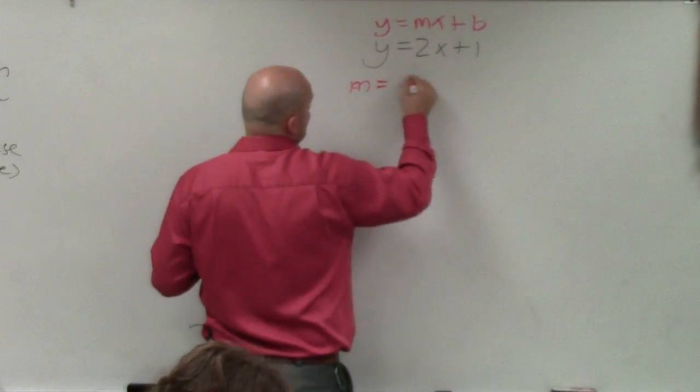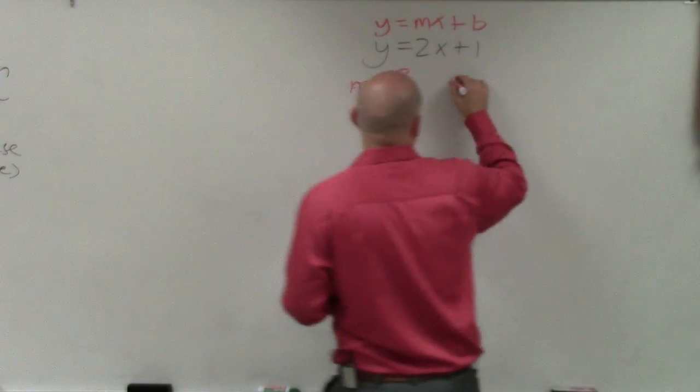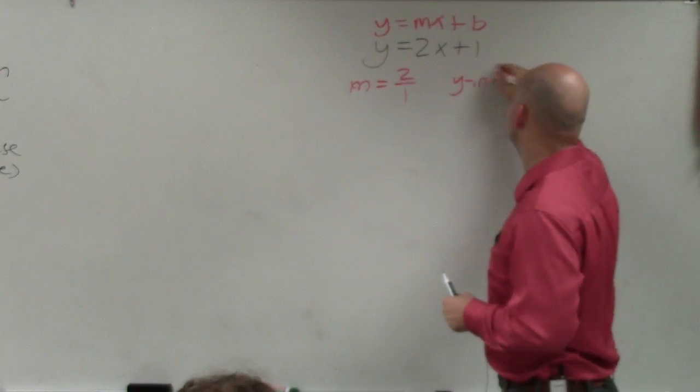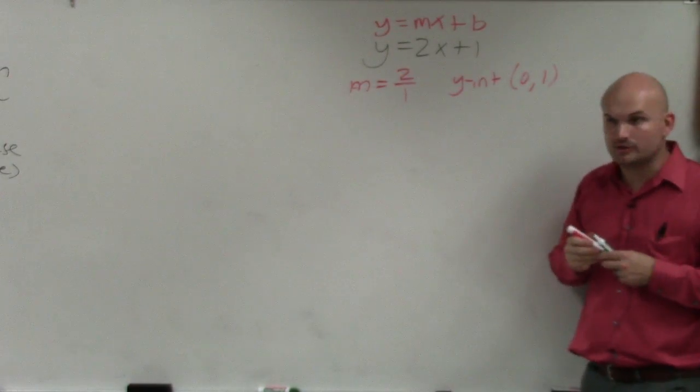Identify what the slope is. I'm going to write it as 2 over 1. I always write the slope as a ratio. And then identify the y-intercept, which is a coordinate point where b, right? It's 0 comma b, and you do that.